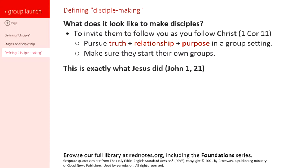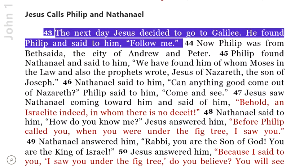This is exactly what Jesus did. He didn't complicate it for his disciples. Look at the Gospel of John, the first chapter. When he's calling his disciples, he found Philip and simply said to him, 'Follow me.' He didn't give him a long list. He didn't tell him exactly what he was going to be doing for the next three years. He just said, 'Follow me.' And that's exactly what Philip and the others did. They followed Jesus through the course of those three years, and they learned truth from him, how to do relationships, and how to pursue your purpose.